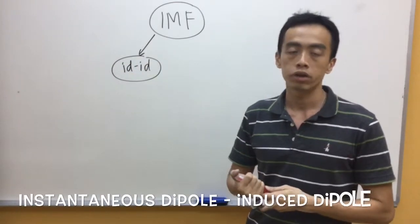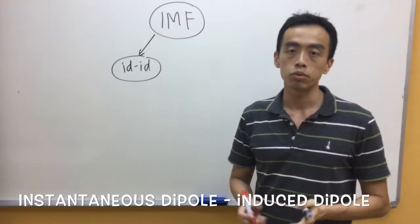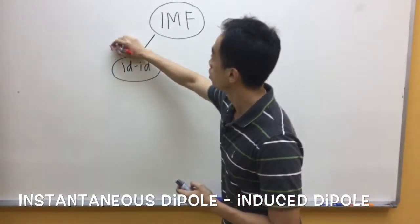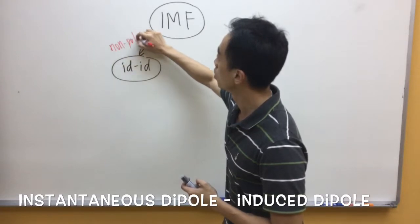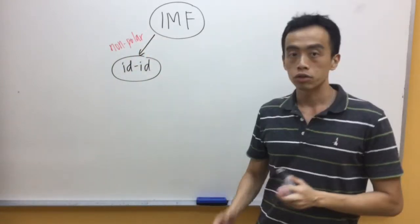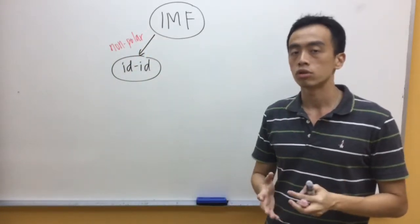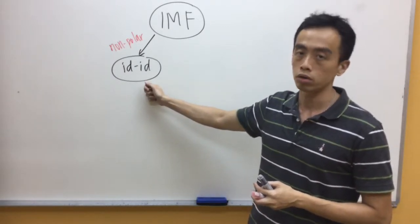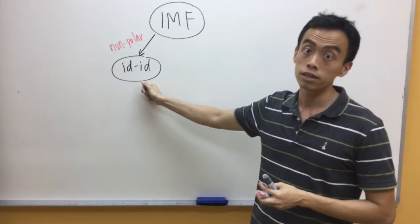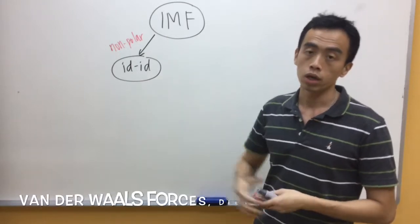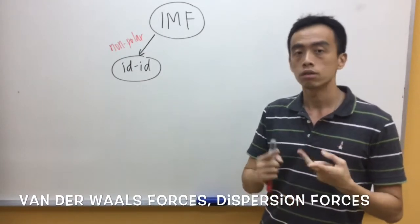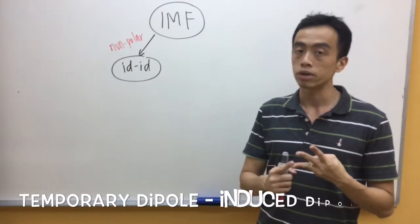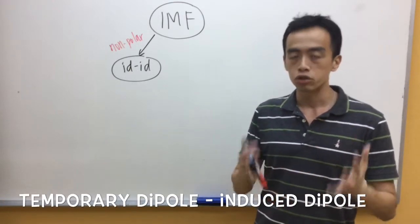The first type will be our I-D-I-D interaction of instantaneous dipole-induced dipole interaction between non-polar molecules. Now, actually, different schools use different names to quantify the type of interaction between non-polar species. We can call this I-D-I-D, instantaneous dipole-induced dipole interaction. We can call this Van der Waals interaction, dispersion forces. Some schools call it temporary dipole-induced dipole interaction.